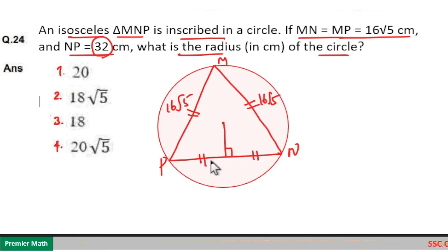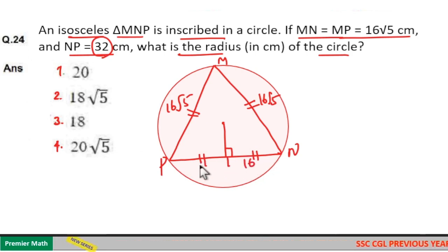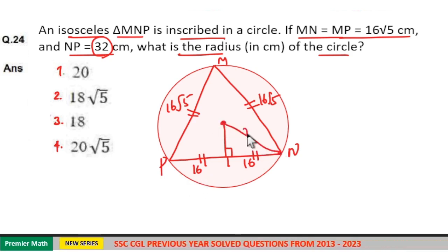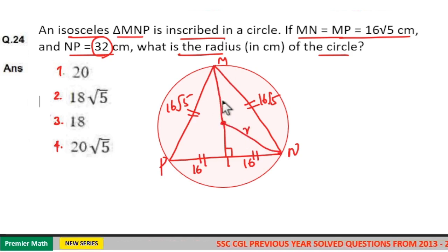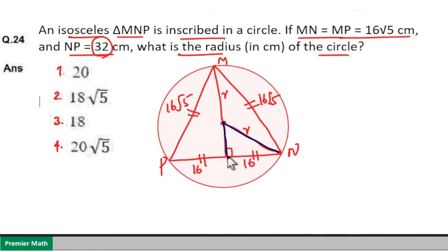That is, if NP is equal to 32, then each half is equal to 16. From the center to a point on the circle, this is radius R. Also, if you draw from the center to M, this is also radius R. Now, if you take this triangle, you can find the radius R.